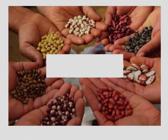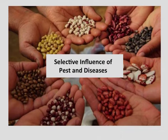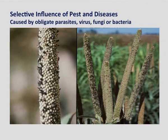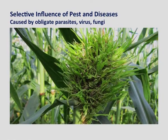The next cause is the selective influence of pests and diseases. New crop varieties are often susceptible to newer races of pests and diseases caused by obligate parasites, which selectively influence deterioration. The vegetatively propagated stock can also deteriorate quickly if infected by virus, fungi, or bacteria. Seed production under strict disease-free conditions is therefore essential.